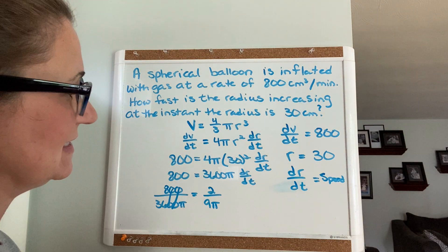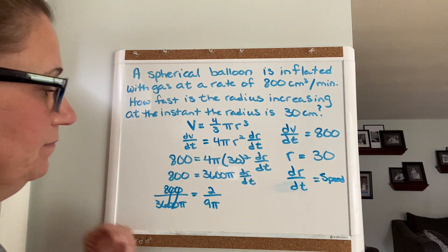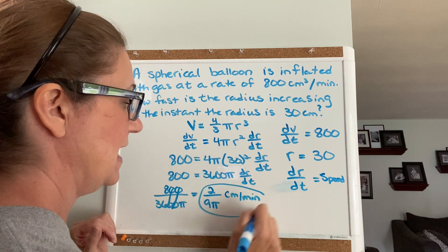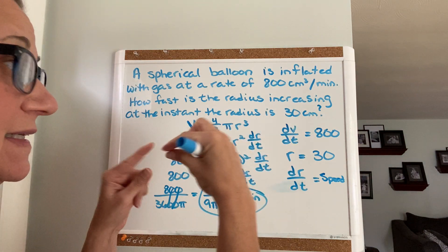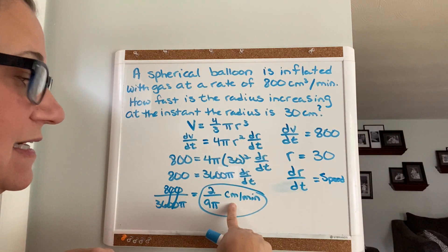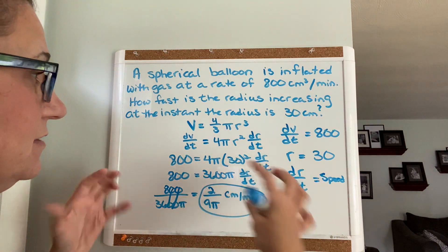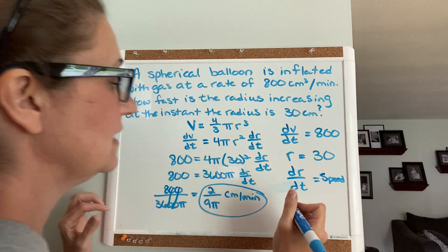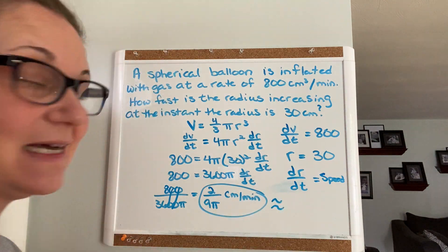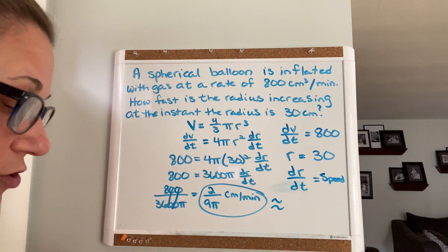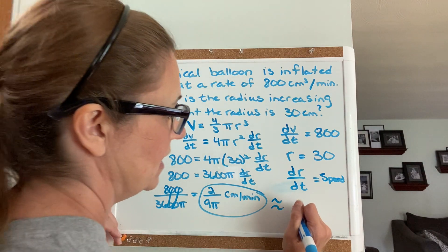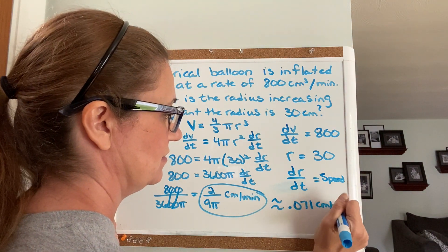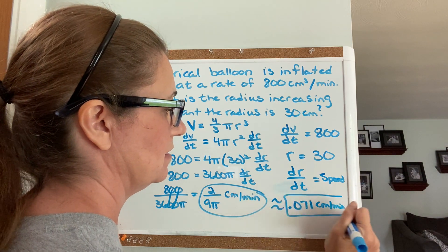So this would be centimeters per minute - that's the speed, centimeters per minute. Keep in mind, radius is linear, so you wouldn't put centimeters squared, you wouldn't put centimeters cubed. Radius is linear, so it's just centimeters per minute. Now if you needed the decimal value for this, obviously do 2 divided by 9π, and you get 0.071 centimeters per minute in decimal form.